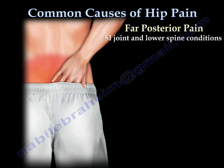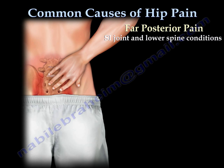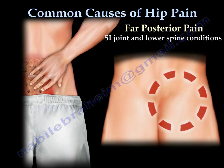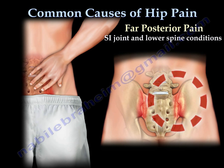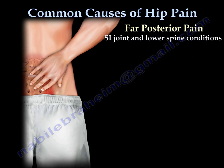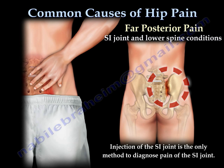Far posterior hip pain is usually due to SI joint and lower spine conditions. SI joint problems can only be diagnosed by injection of the SI joint with improvement in the patient's pain level.